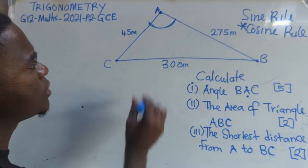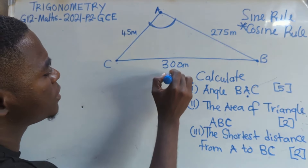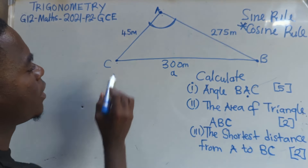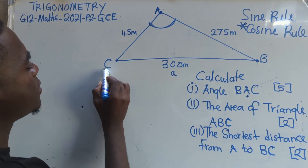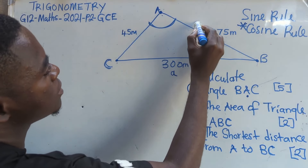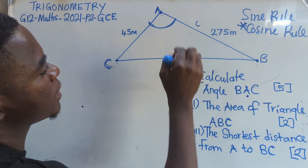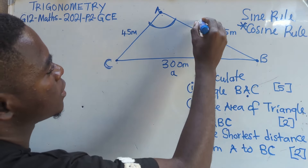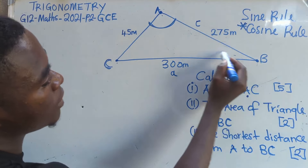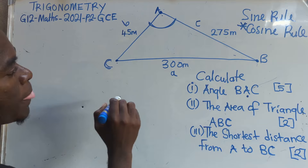So what we are going to do is — have you seen where this angle is pointing? It's pointing down. This is where I've got small letter A. This is C. Have you seen where C is pointing? It's pointing that side. This is where I've got small letter C. This is B. Have you seen where B is pointing? This is where I've got small letter B.